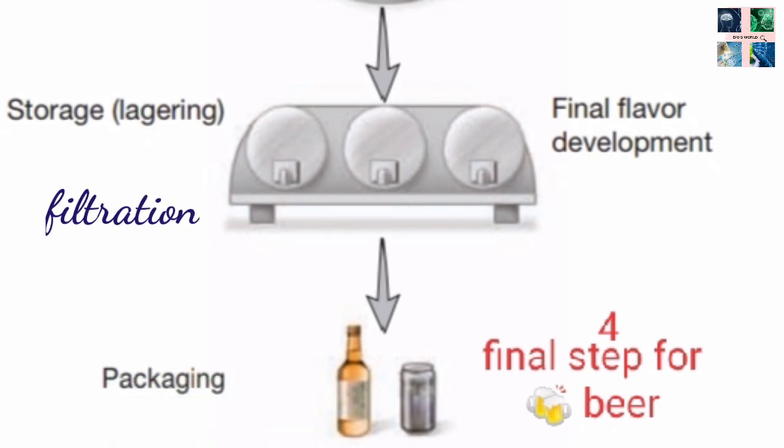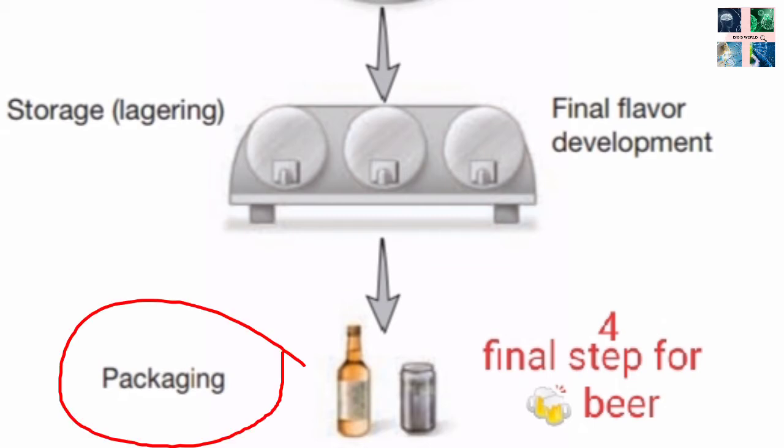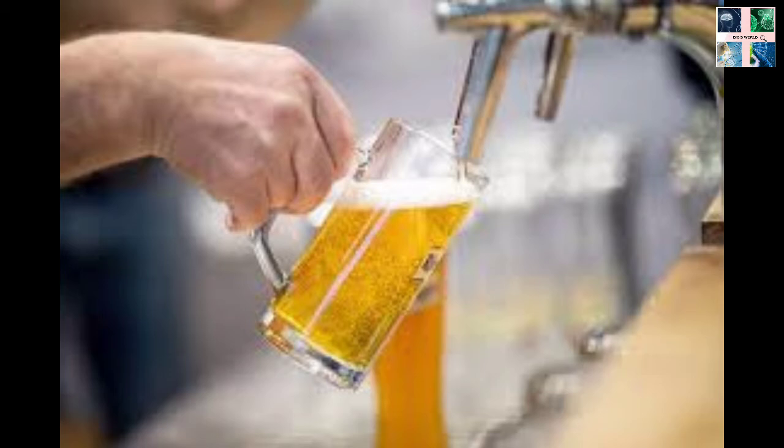The next step is filtration. At this stage, any substances still remaining after fermentation and secondary fermentation — such as yeast particles, hops, resins, and proteins — are extracted, and the beer gets its final clear color. The final step is filling or packaging, where bottles or cans are filled from the filling station. The beer is filled using counter pressure to prevent carbon dioxide from escaping. Barrels are filled directly at the brewery. The beer is now ready to serve.